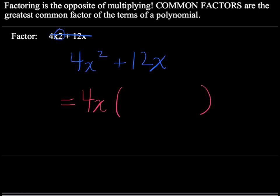Okay, so in my first term, 4x squared, if I divide that by 4x, I get x. Or in other words, 4x times x is 4x squared. In my second term, in white here,